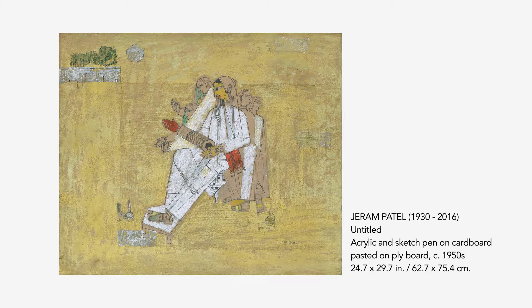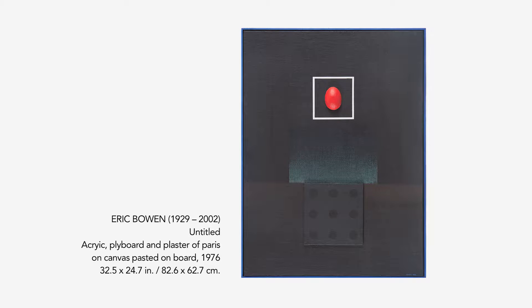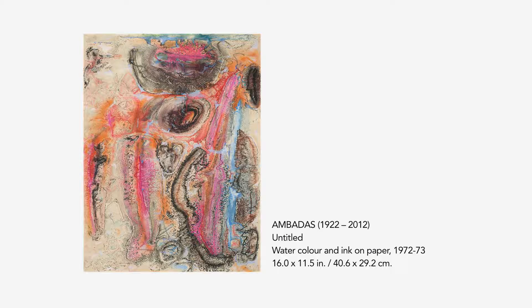Sources from the indigenous visual traditions around the country. Group 1890 continues to be this small blip in the large mapping of Indian art for the kind of phenomenally successful exhibition they held in October 1963, which was inaugurated by no less than the Prime Minister of the country himself, Jawaharlal Nehru.